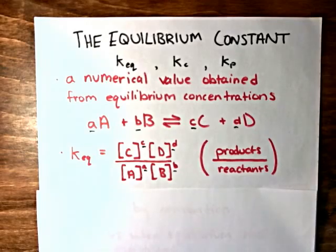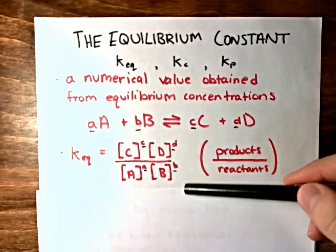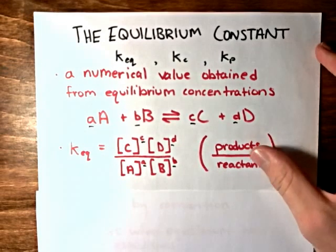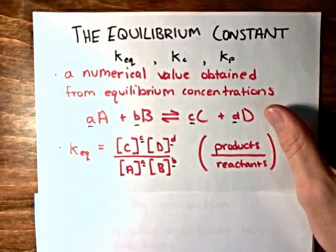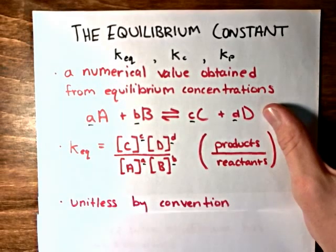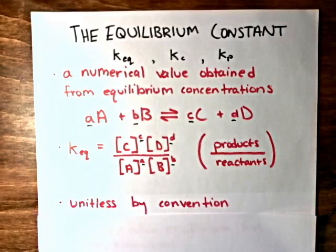From that, we can determine the equilibrium constant by inputting values of the equilibrium concentration into the expression, and that gives us the numerical value of the equilibrium constant. It's important to note that it's unitless by convention.